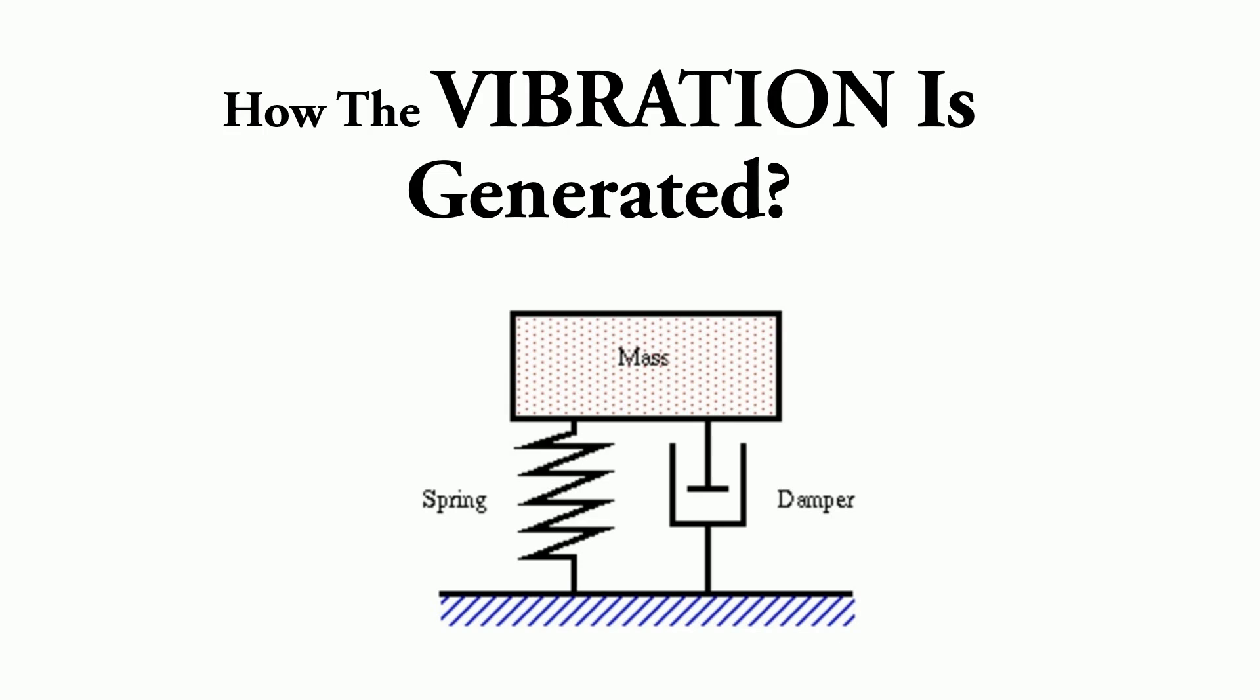Energy is stored by mass in the form of kinetic energy, in the spring in the form of potential energy, and dissipated in the damper in the form of heat energy, which opposes the motion of the system.